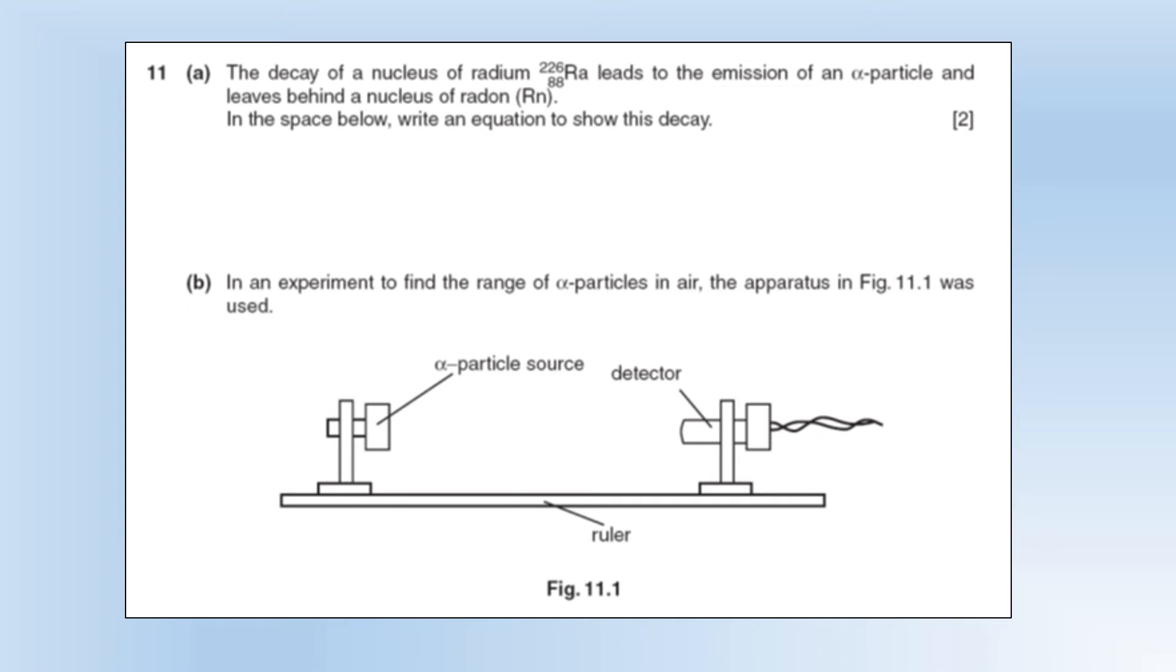So the decay of a nucleus of radium leads to the emission of an alpha particle and leaves behind radon. Write an equation for this. So an alpha particle is two neutrons, two protons, so four nucleons. So you've got, and we refer, you can have an alpha there, but I usually refer to it as a helium nucleus.